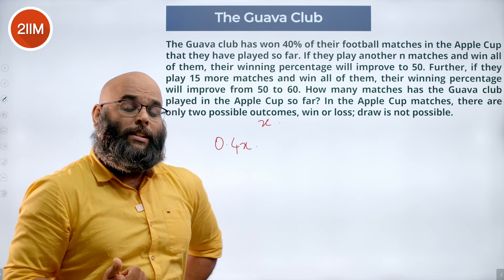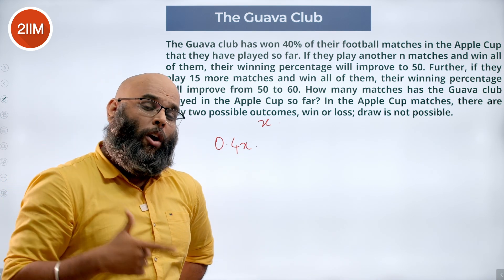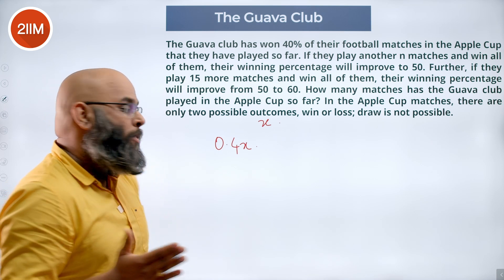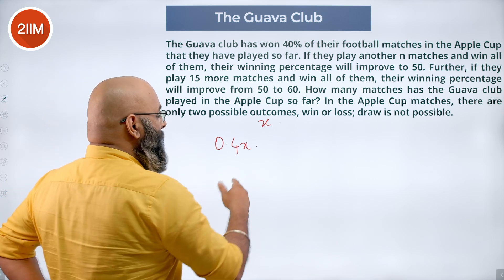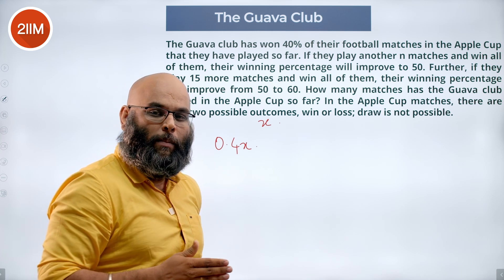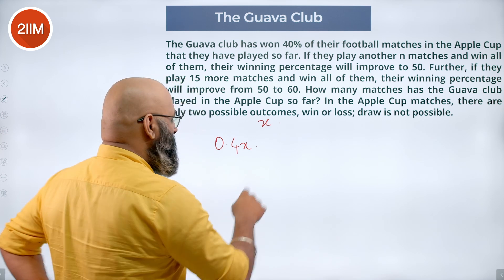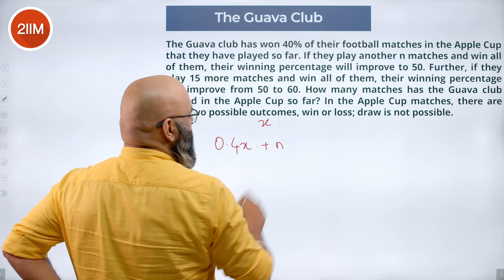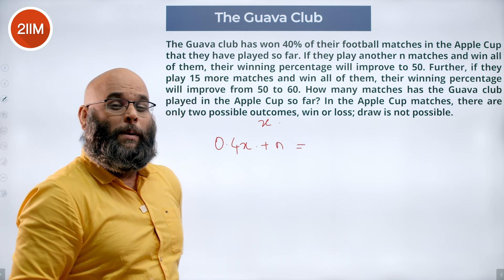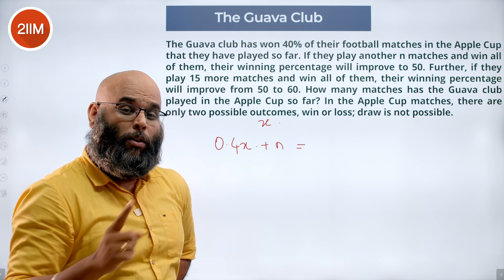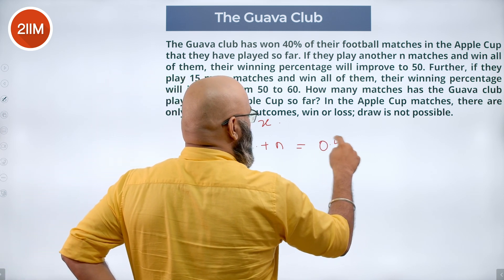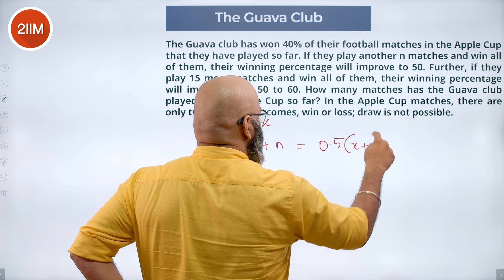They play another n matches and win all of those n matches — 100 percent of the n matches, which gives n itself. Their winning percentage goes to 50 percent of the overall, that means 0.5 of x plus n.